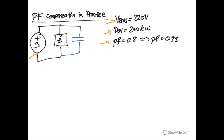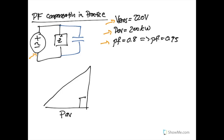Looking at the major components: if we have our real power, our reactive power, and then our resultant or apparent power, recall that our power factor is that average power over the apparent power.